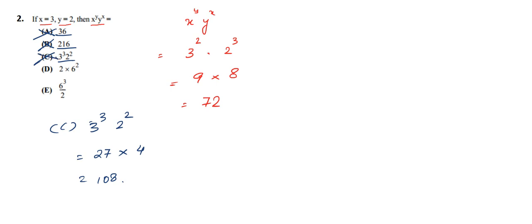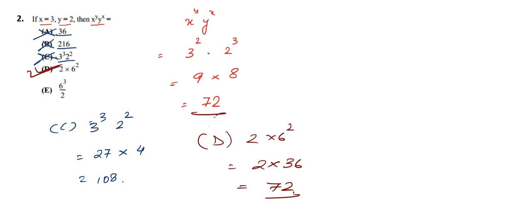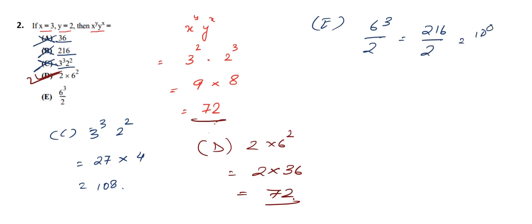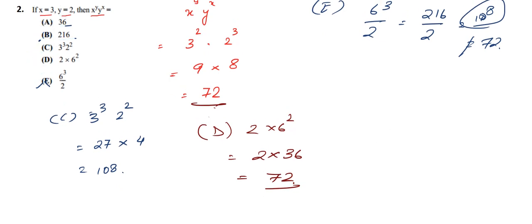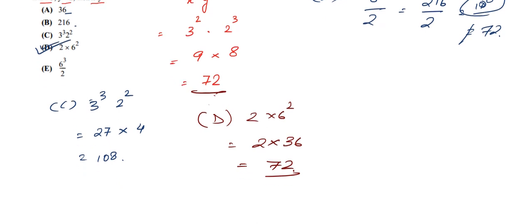Option D is 2 into 6 squared. 2 into 6 squared is 2 into 36, which equals 72. So this matches our answer. Option E is 6 cubed by 2: 6 cubed gives 216, divided by 2 gives 108, which is not equal to 72. Hence E is not correct. Therefore, the correct answer to this question is option D — 2 into 6 squared — which equals 72.